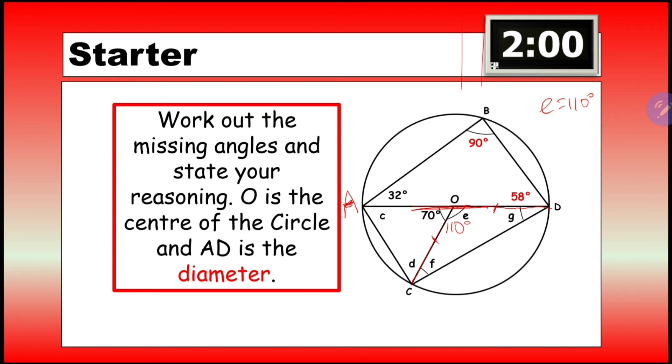To work out both of them, it's going to be 180 minus 110, which gives us 70 degrees. And because they're both the same, we're just going to do 70 divided by 2, which is 35 degrees. So G and F are 35 degrees each.